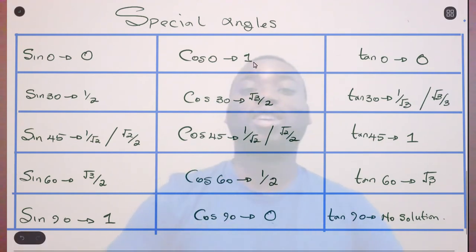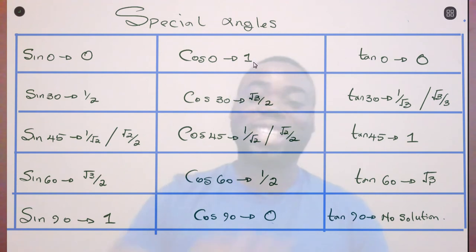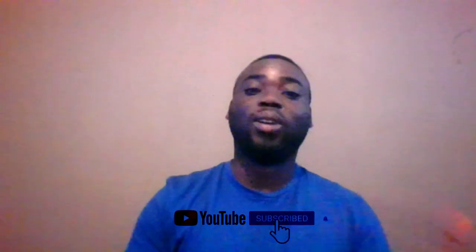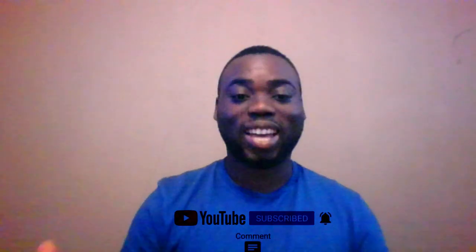So we've covered special angles — it's a very important section. You may not encounter special angles on their own very often, but you will need them in other trig sections where you have to simplify expressions. With these two methods — the wheel and the two triangles — I hope you can remember how trig functions work. Please don't forget to like and subscribe. Thank you.